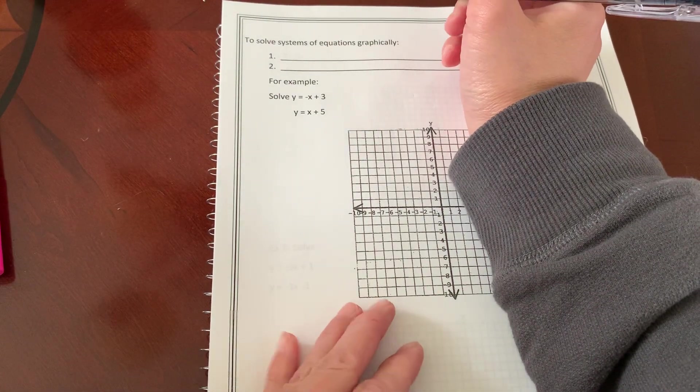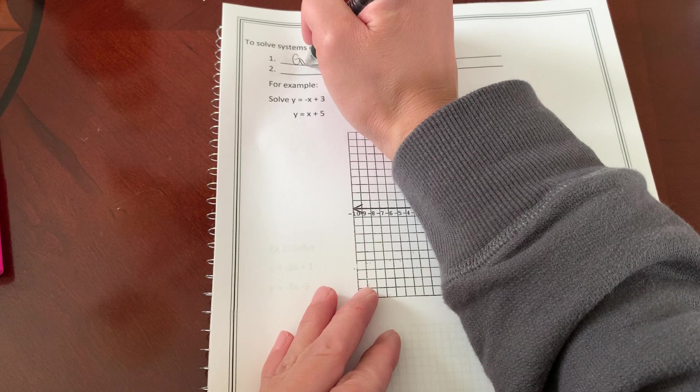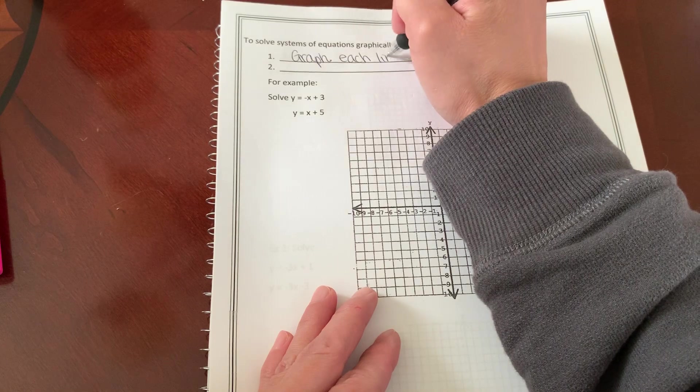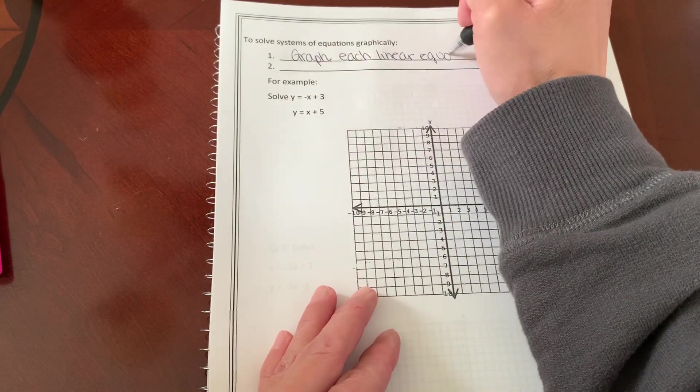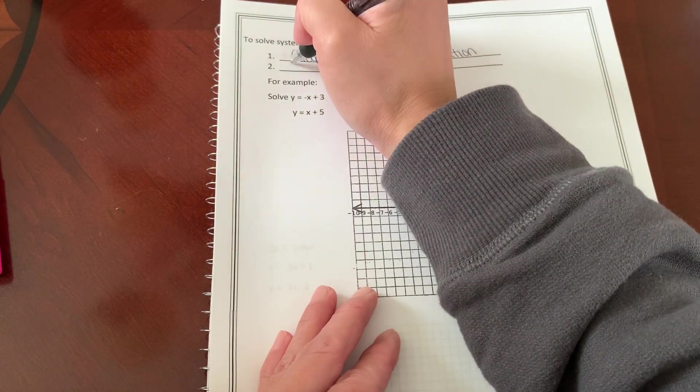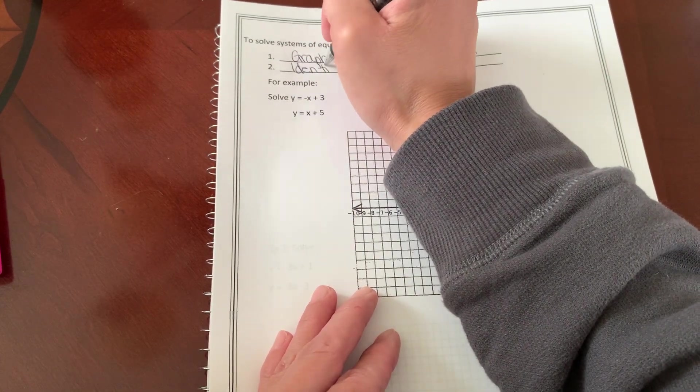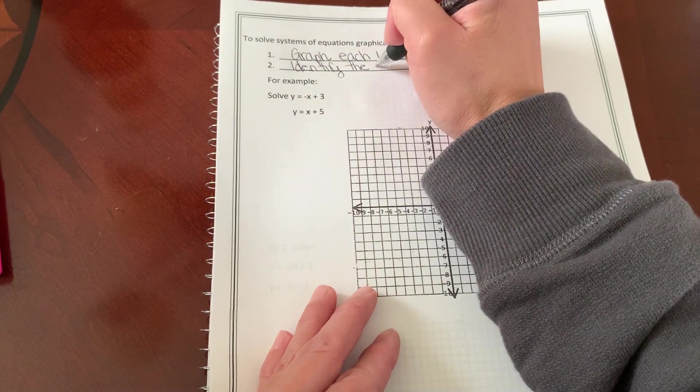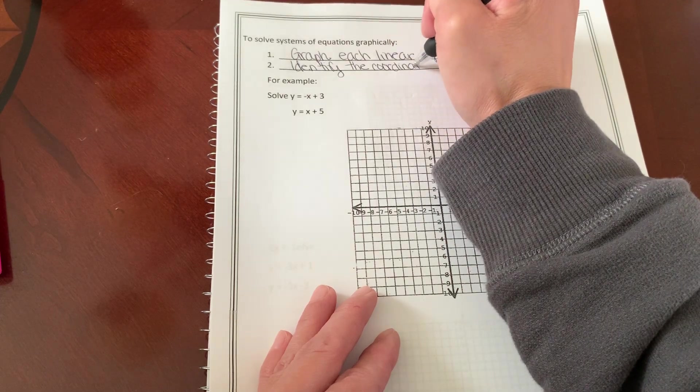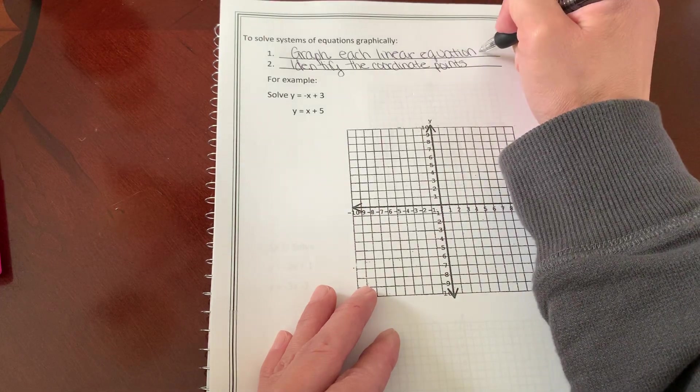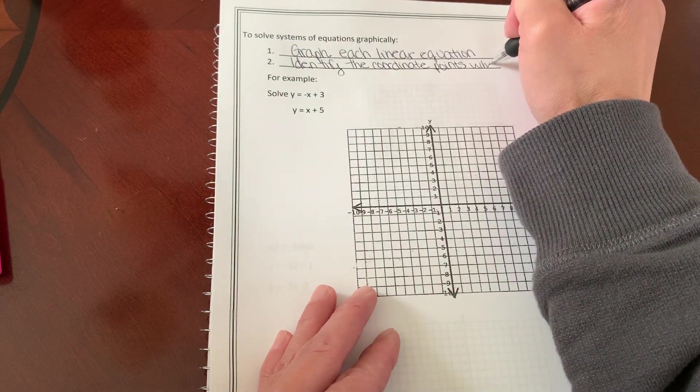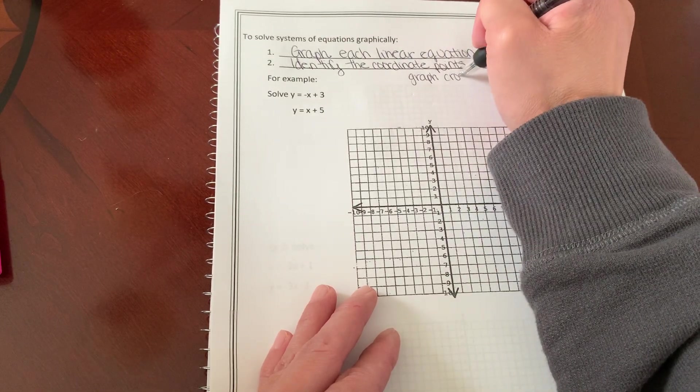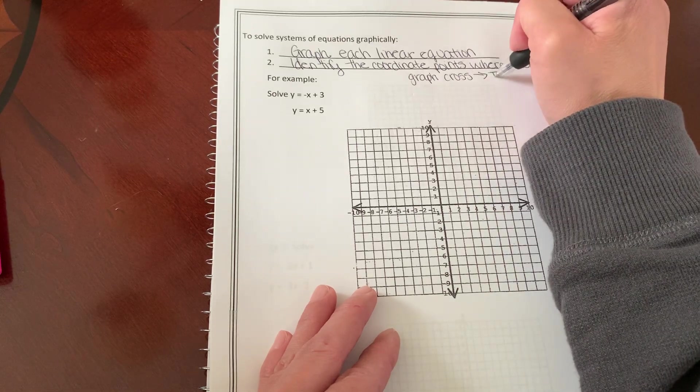To solve systems of equations graphically, you're going to do two things. Step one, you're going to graph each linear equation. And then step two, you are going to identify the coordinate points where the graphs cross. This is your solution.